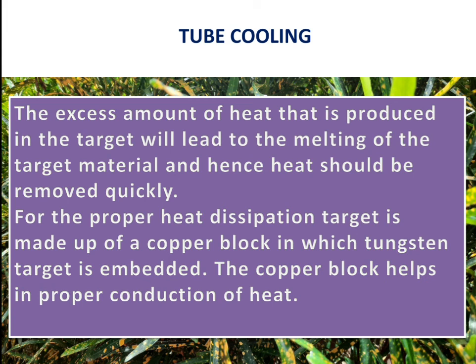For proper heat dissipation, the target is made up of a copper block in which a tungsten target is embedded. The copper block helps in proper conduction of heat. The anode of the x-ray tube is made up of a copper block with the tungsten button embedded in it. Copper is used because of its very good heat conductivity, allowing heat produced in the target to be conducted and transferred to the external environment.